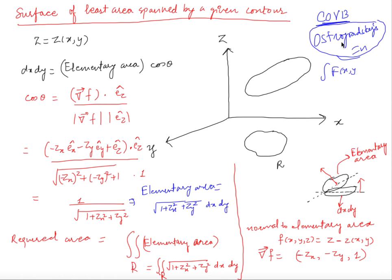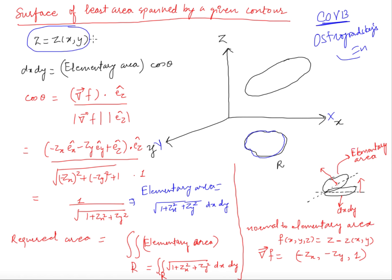We have this problem of finding the surface of least area spanned by a given contour. Suppose you have a fixed region R in the x-y plane, and you have this function z = z(x,y), which is basically a surface. For every point in region R, you have a value z, and so you have this surface.